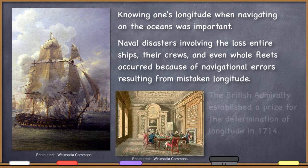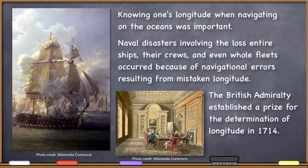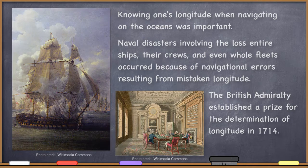Eventually, the British Admiralty put out a prize — sort of the equivalent of today's X Prize. The X Prize today is the prize that got a private mission to space, and they do all kinds of prizes like that. At the time, the main scientific prize was for somebody to determine a practical way of determining longitude well at sea.